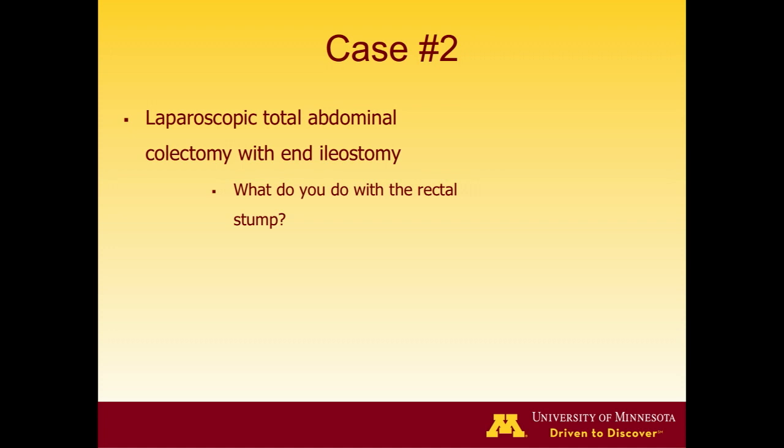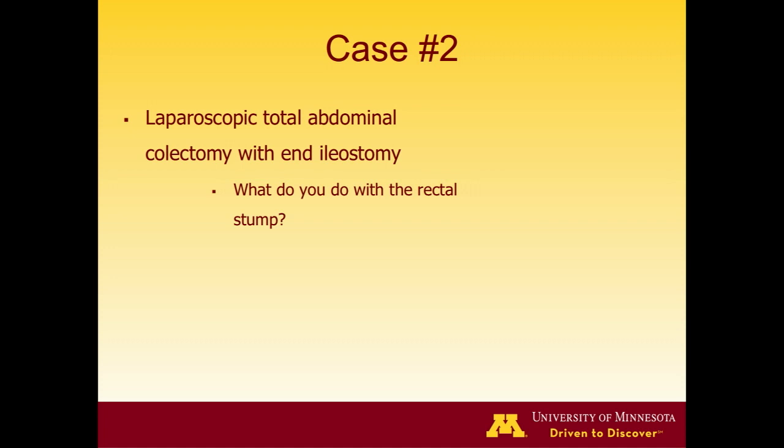For the rectal stump in severely malnourished patients when the stump can't reach the fascia: Brad oversews the staple line and leaves drains both next to the stump and inside the rectum. Ian does the same. Rob dislikes rectal drains and instead irrigates the rectum on the floor with a red rubber catheter. During rectal stump washout with betadine, betadine was seen coming from the vagina — a recto-vaginal fistula.